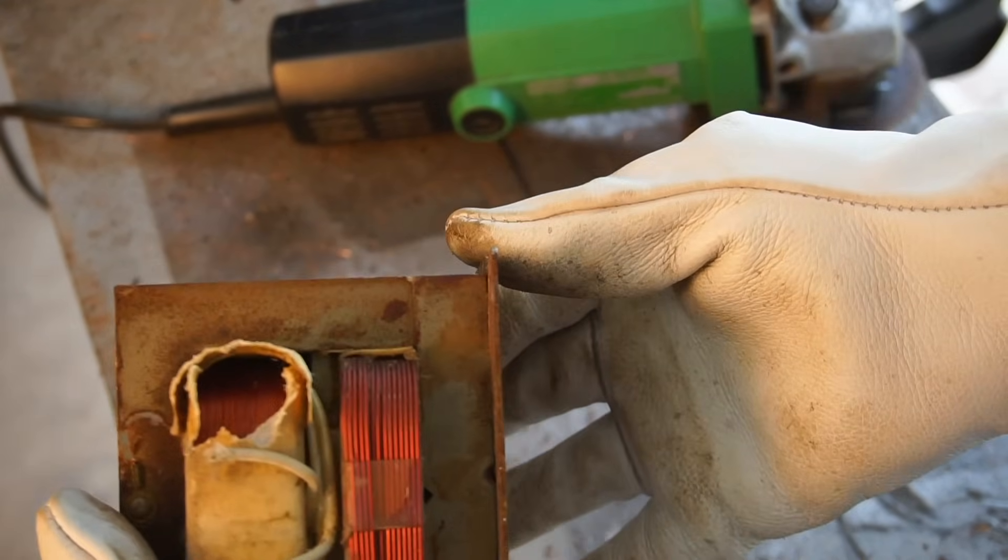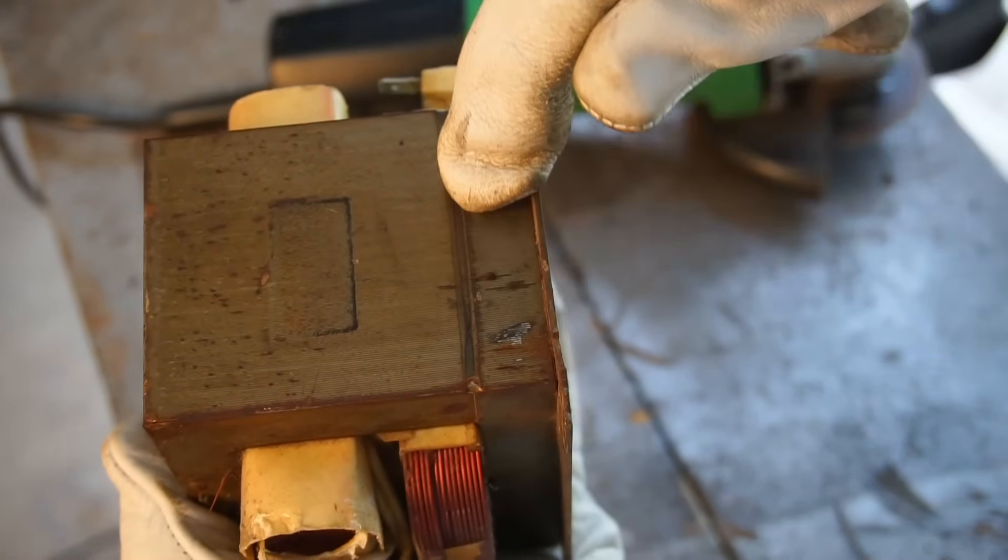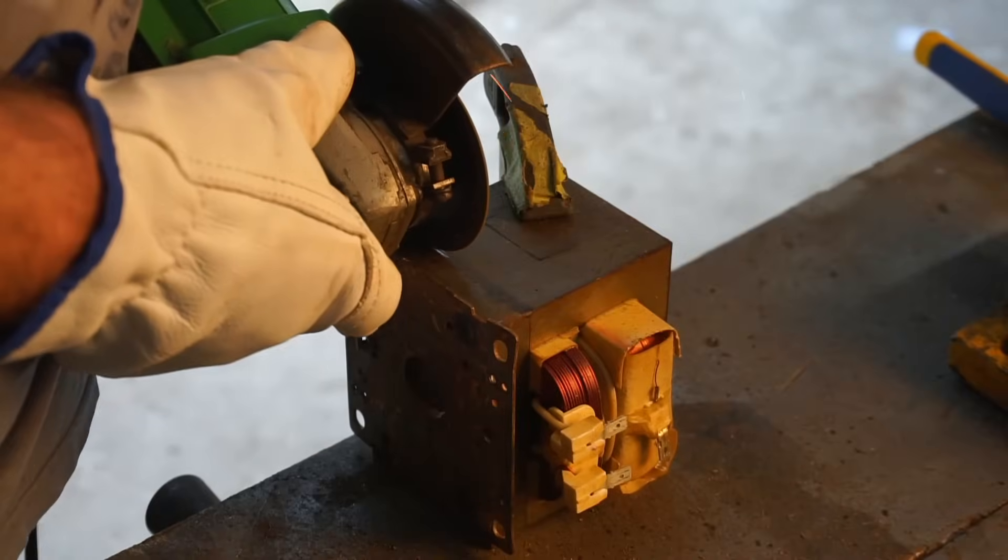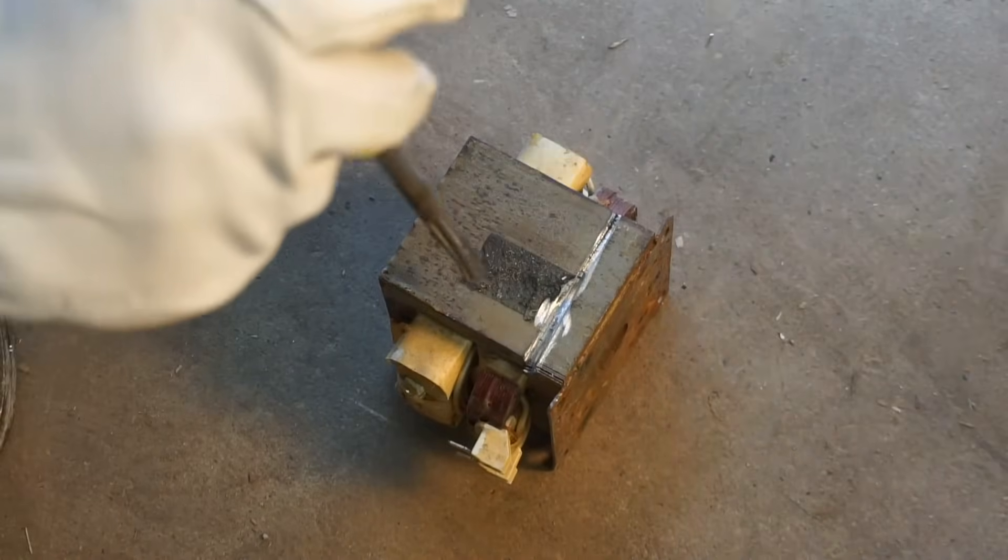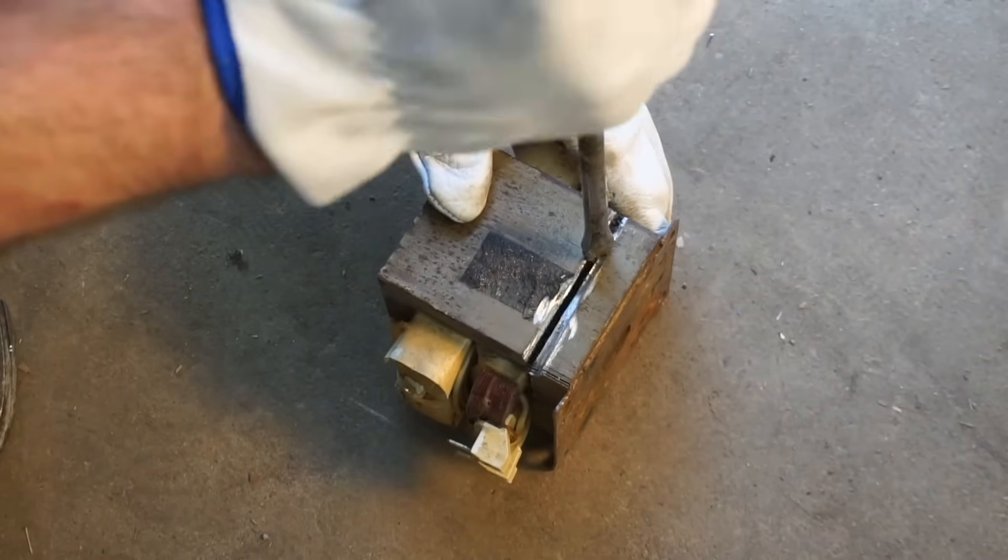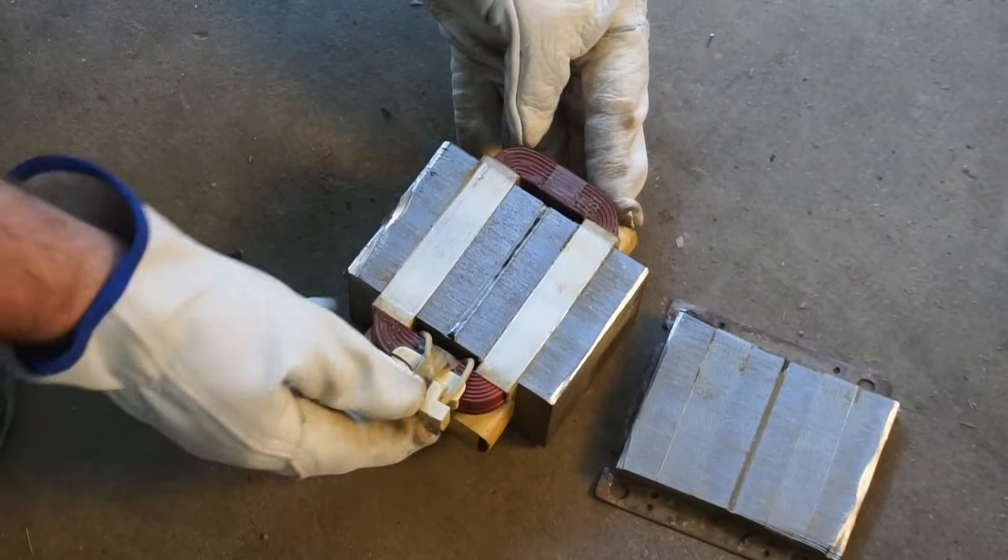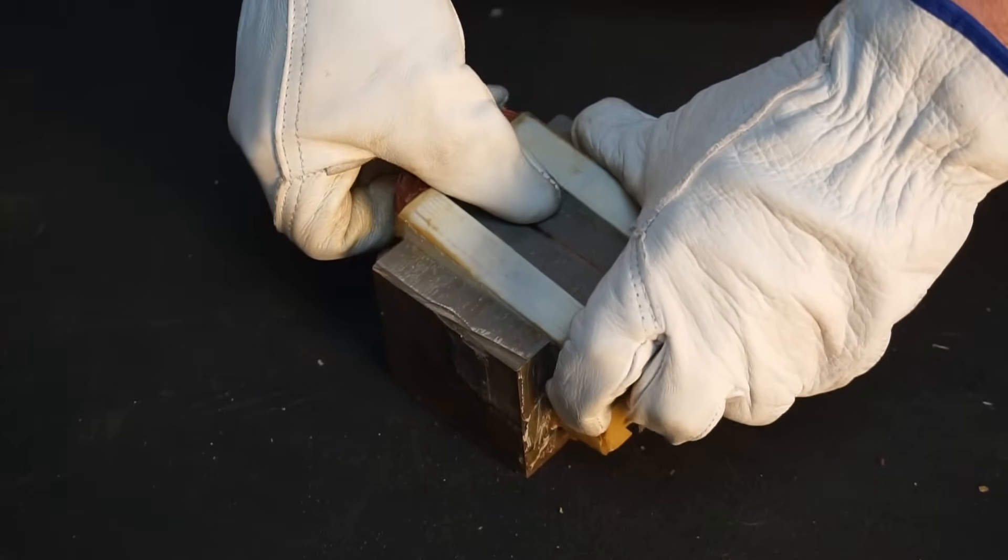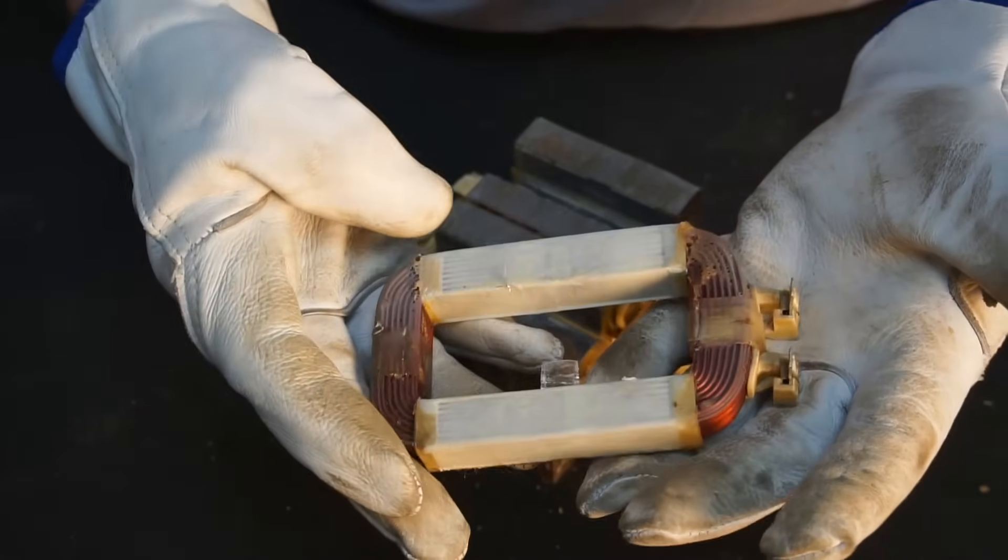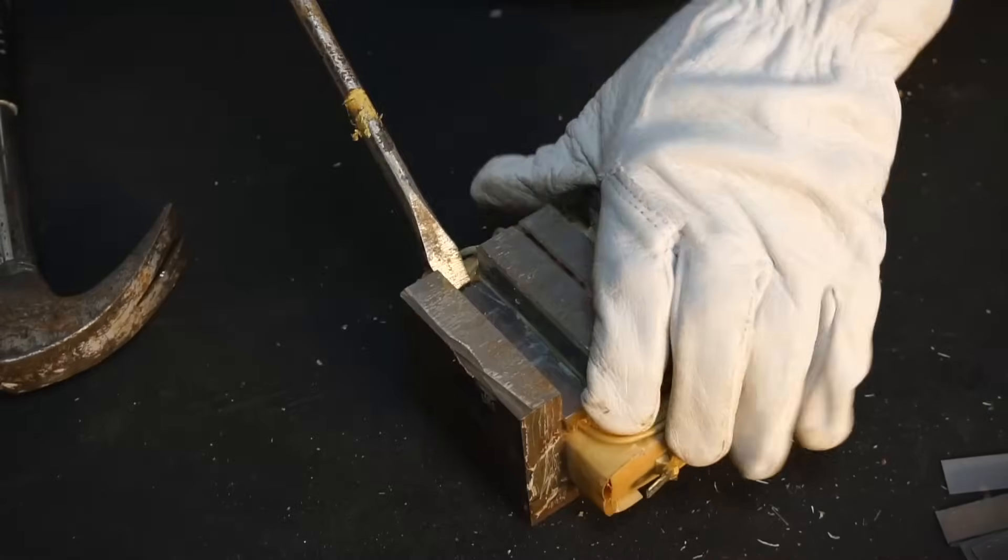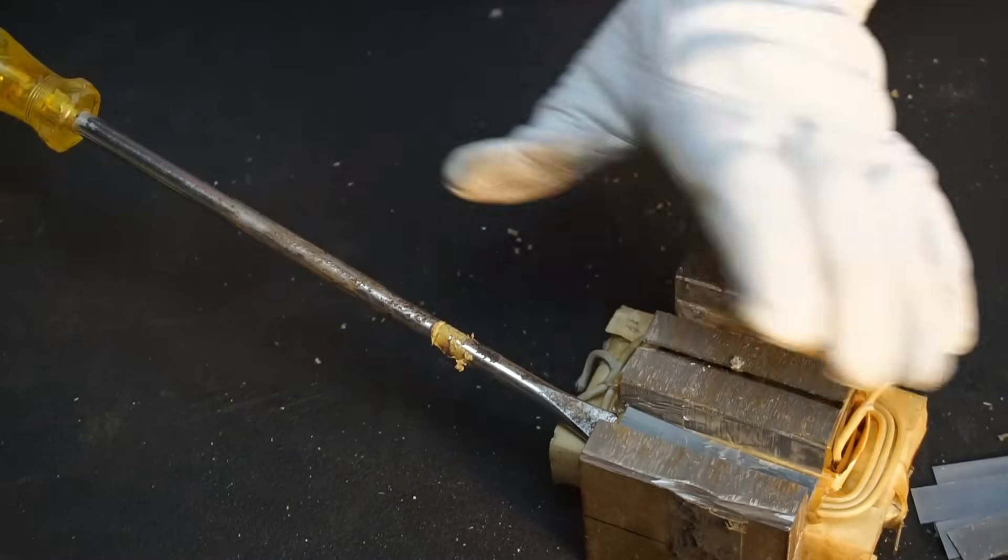All right, time to scale things up and modify my microwave oven transformer. Typically MOT transformers have a weld on either side holding the E and I sections together. Separating the two sections is as simple as grinding deep enough to remove the weld and then prying the two halves apart. I carefully remove the heavy primary winding from the core and set it aside for later. The secondary winding is of no use for this project, so it doesn't matter if it gets damaged during removal.